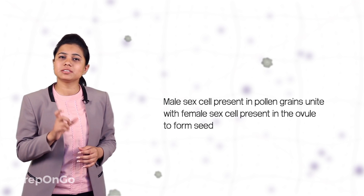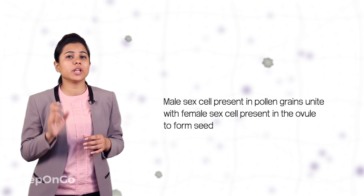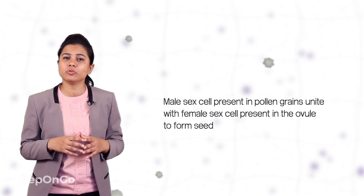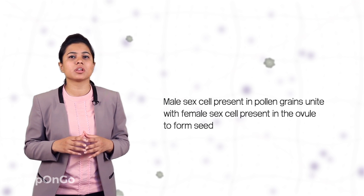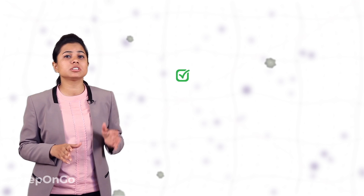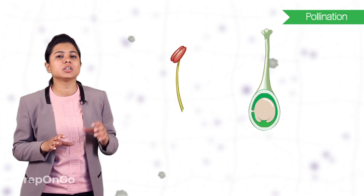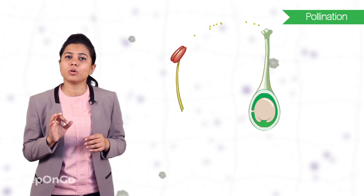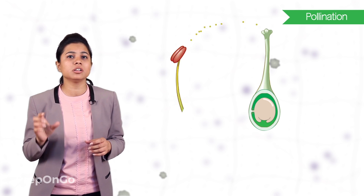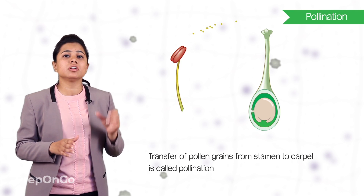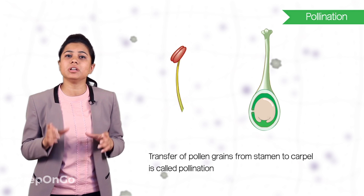So we have seen the male and female reproductive parts. Now let's understand how reproduction, or the formation of seeds, takes place. When the male sex cells present in the pollen grains unite with the female sex cells present in the ovules, it leads to the formation of seeds. This complete process occurs in two steps: pollination and fertilization. In pollination, the male sex cells present in the pollen grains need to be transferred to the female sex organ, which is the carpel. So this transfer of pollen grains from stamen to carpel is called pollination.